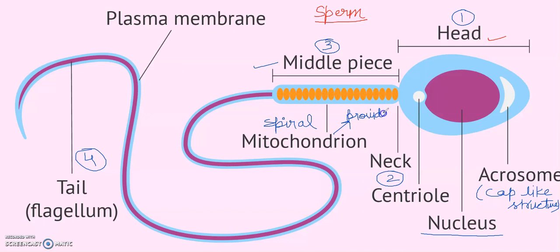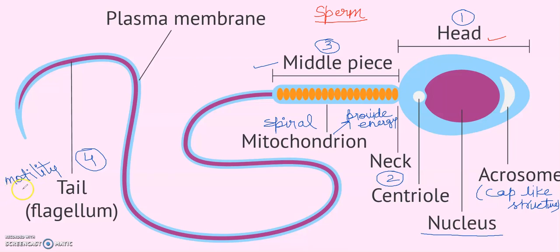The last part of the sperm is the tail, which is called the flagellum. It gives motility to the sperm and helps to propel it forward.